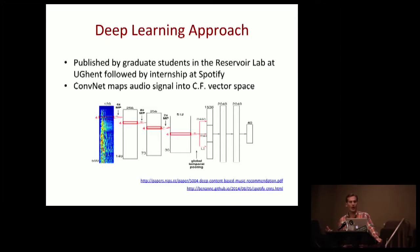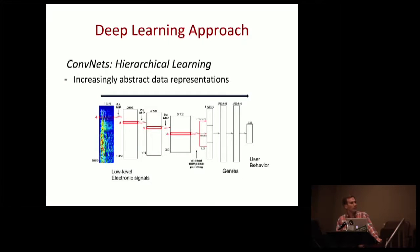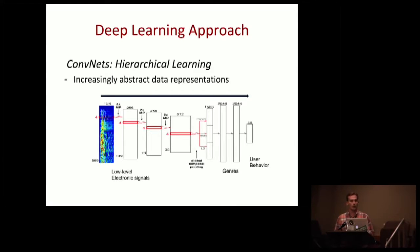This is useful because new tracks face the cold start problem — when a new track comes out, it has no listens and can't be recommended. This research addresses that problem for items rather than users. To follow the rest of the talk: convolutional neural networks learn hierarchically, typically used for image recognition. The lower levels look for edges and contrasts — simple things. Later layers look for abstract things like cats or airplanes, and the same happens with music.